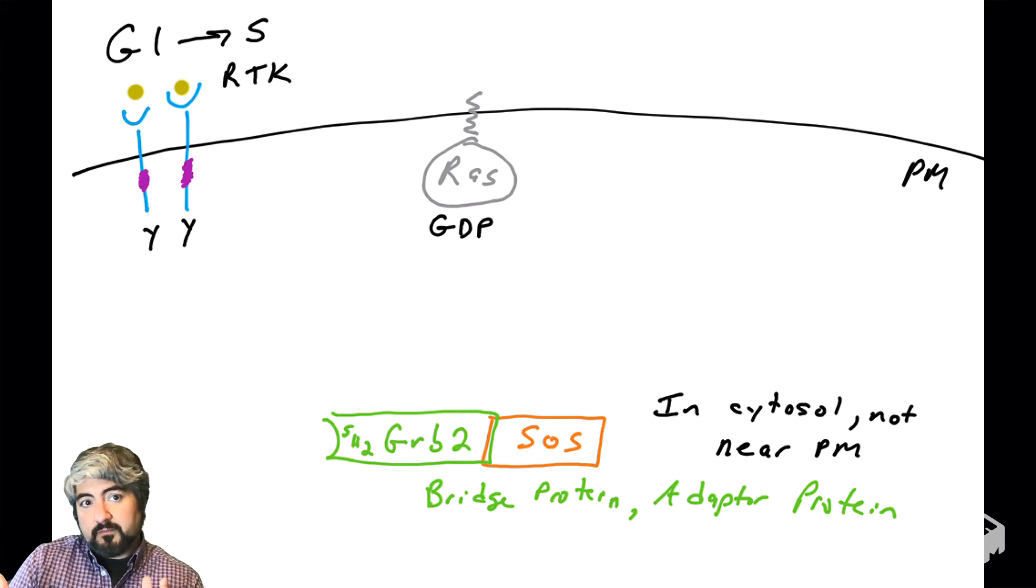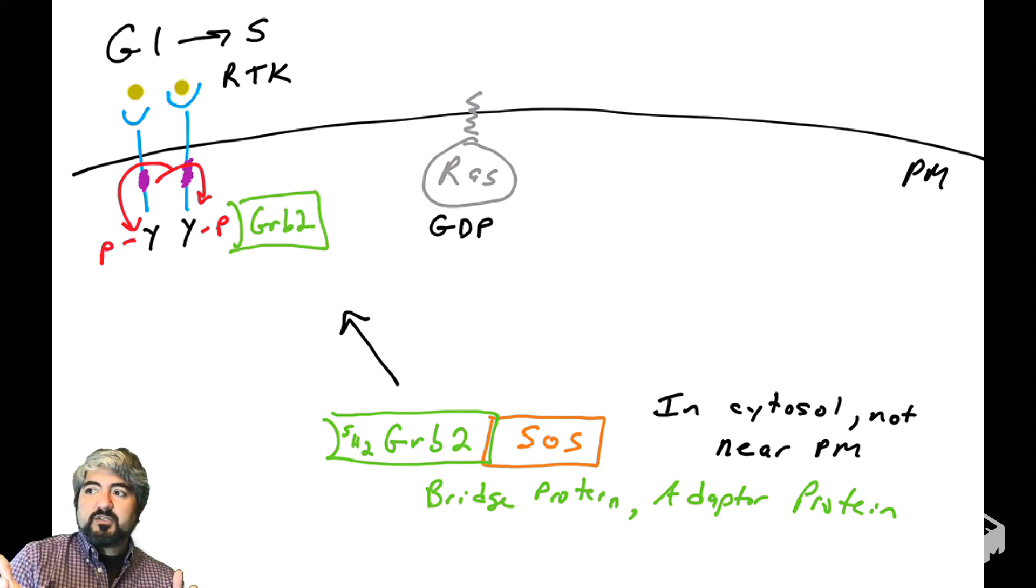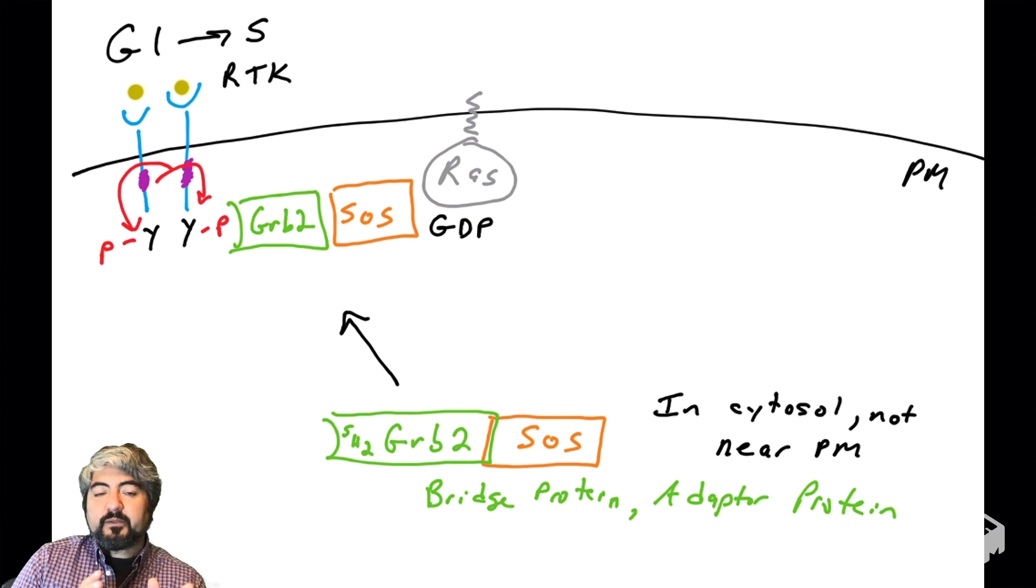Now, let's say the cell gets a signal to grow. It's being exposed to growth factors that are causing dimerization and transphosphorylation of the tyrosines in the tails of the cytoplasmic domains of the receptor tyrosine kinases. What happens when you have phosphorylated tyrosines? Well, proteins can bind those phosphorylated tyrosines, proteins that have SH2 domains, such as GRB2. Here's GRB2 binding phosphorylated tyrosines in the tails of receptor tyrosine kinases.